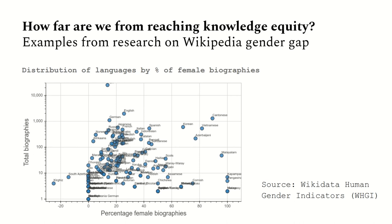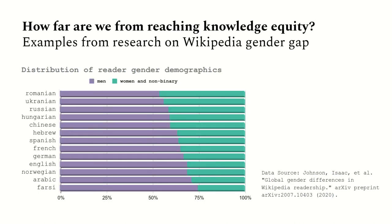The gender gap has been investigated by researchers and practitioners for years. Researchers have found that a very small percentage of biographies in Wikipedia is about women, and the Wikidata Human Gender Indicators initiative is tracking the percentage of female biographies across different Wikipedia editions. A recent effort from the research team and collaborators tried to quantify the gender gap in Wikipedia readership. Through a survey, they found that 75% of page views in Wikipedia are from men. This gender gap is even wider when we consider the gender distribution of editors.